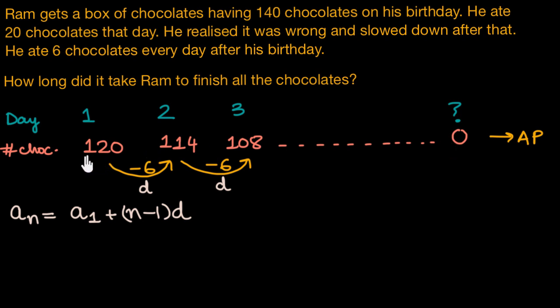So in this sequence, 120 is our first term, so this is A1. And what we need to find out is how many days it took Ram to finish all the chocolates. Meaning if it took Ram n days, if zero is the nth term, we have to figure out how much is the value of this n.